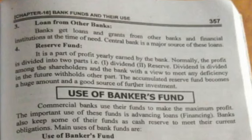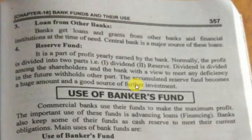The third one is loan from other banks. Agar bank ko zaroorat pade, to bank doosre banks se loan bhi le sakta hai. Aur bank ka jo major source hai jisse woh loan leta hai, woh hota hai central bank.